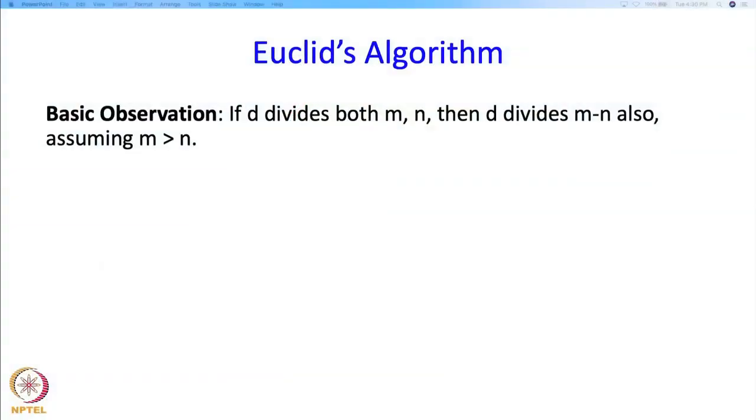So what is Euclid's algorithm? There is a basic observation which is actually fairly simple. The basic observation says that if D divides both m and n then D divides m-n also and here we are assuming that m is bigger than n. So why is this?